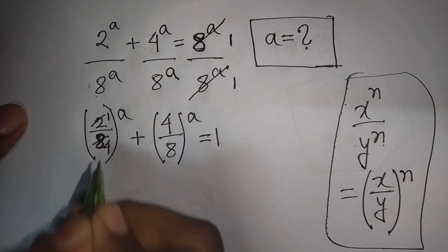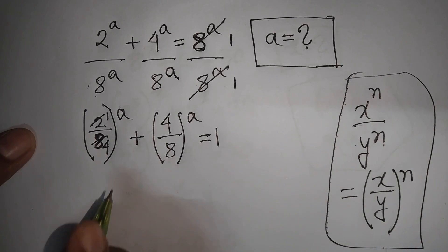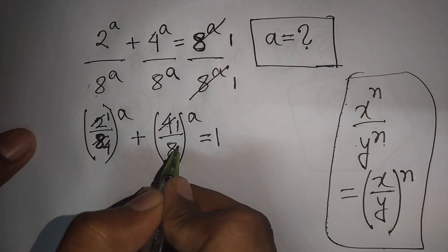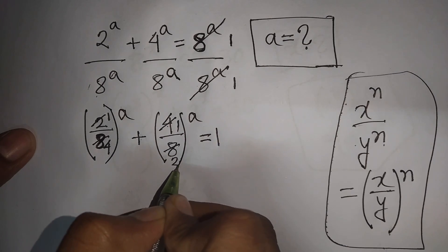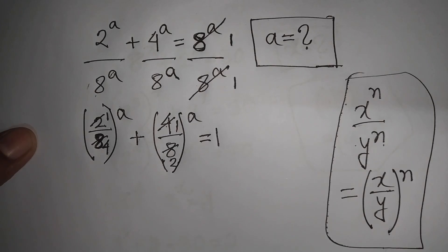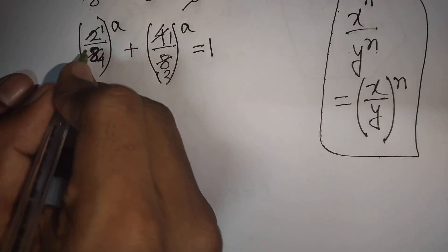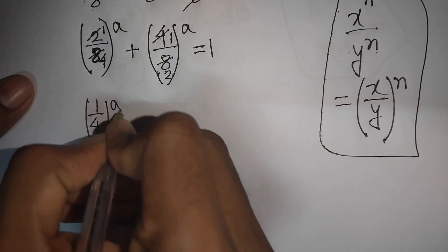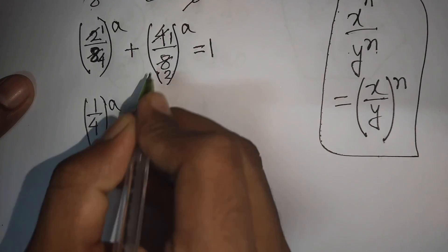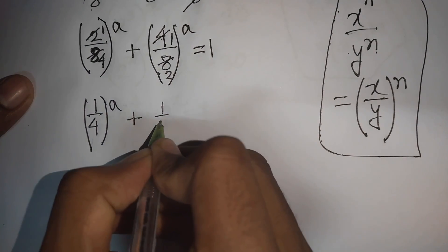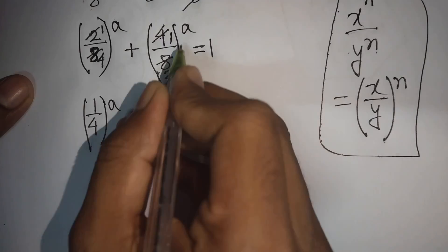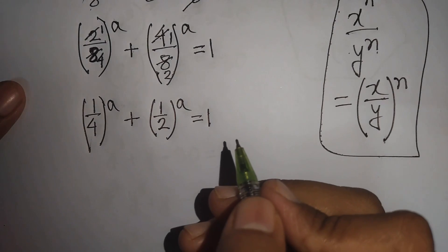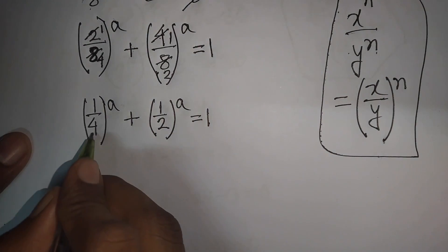Now simplify: 2 divided by 8 — simplify by 2 — gives 1 over 4. Then 4 divided by 8 — simplify by 4 — gives 1 over 2. So we have 1 over 4, bracket raised to power a, plus 1 over 2, bracket raised to power a, equals 1.